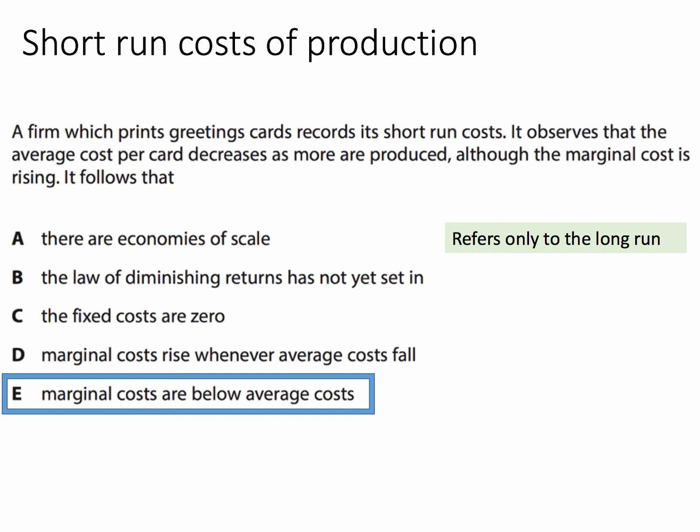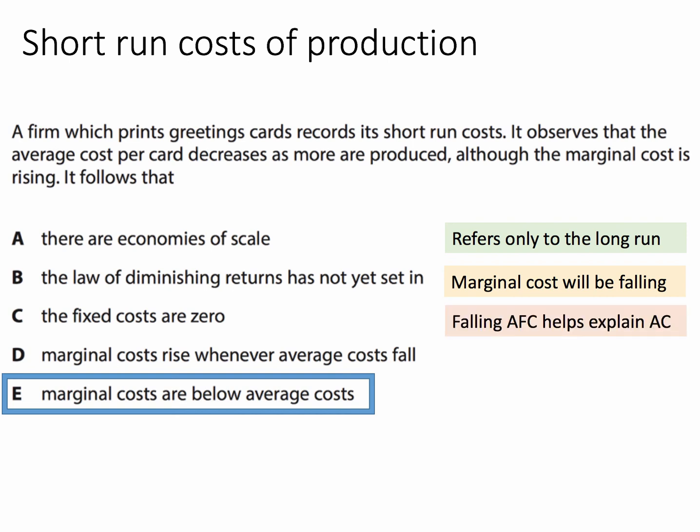Option A says there are economies of scale — falling average cost — but economies of scale and increasing returns refer only to the long run, not the short run. Option B says the law of diminishing returns has not yet set in. But if that were the case, the marginal cost of each extra card would be falling, not rising as the question suggests.